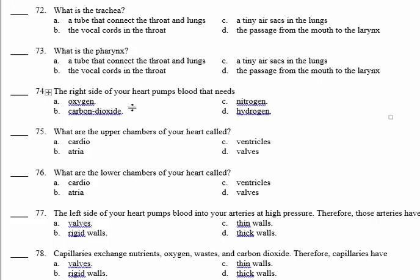Number 74: the right side of your heart pumps blood that needs oxygen, because the blood in the right side of the heart is oxygen-poor. 74, A.